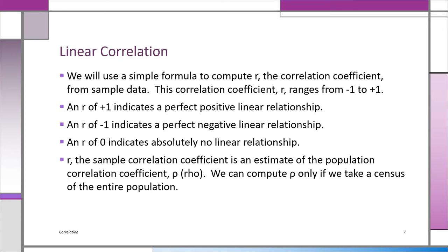I'm going to show you a simple formula to compute R. R is the correlation coefficient, and R ranges from minus one to plus one. If you get an R of plus one, that means it's a perfect positive linear relationship — all the points are on a straight line. An R of minus one indicates a perfect negative, or inverse, linear relationship. An R of zero indicates there's no linear relationship between the two variables you're examining.